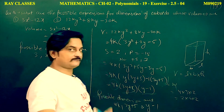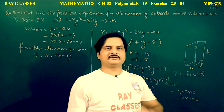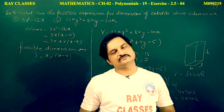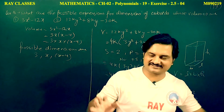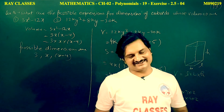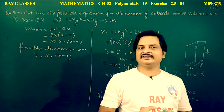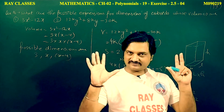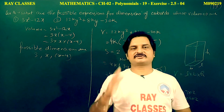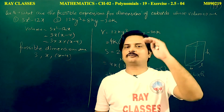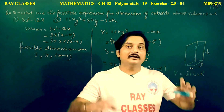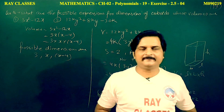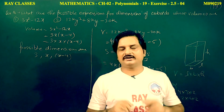This completes the discussion of exercise 2.5 of chapter 2 of NCERT, and with this our chapter 2 — Polynomials — is complete. We are now experts in the polynomials chapter. I hope that when you studied this, your gyan-chakshu — your knowledge eyes — opened a little. Chakshu is the Sanskrit word for eyes.